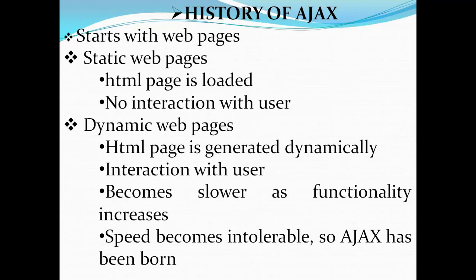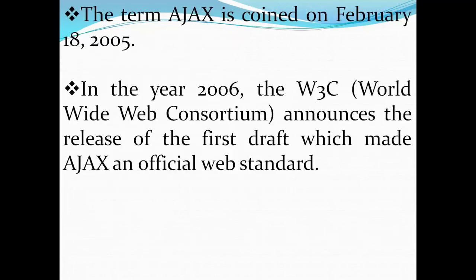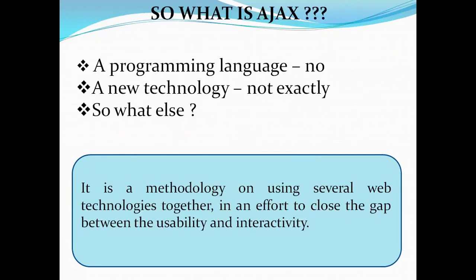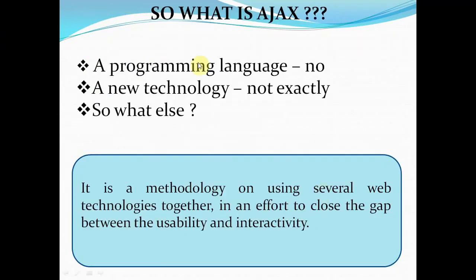That is why Ajax was born. Ajax started in 2005, and during 2006 the World Wide Web Consortium announced the release of the first draft which made Ajax an official web standard. So again, Ajax is not a programming language or a new technology — it is a methodology of using several web technologies together.